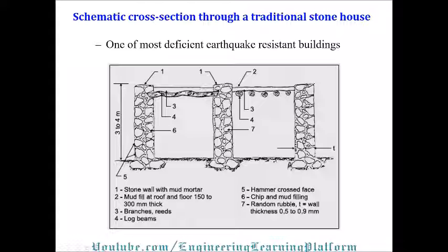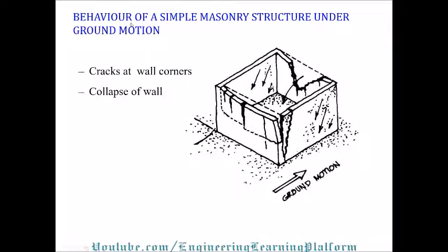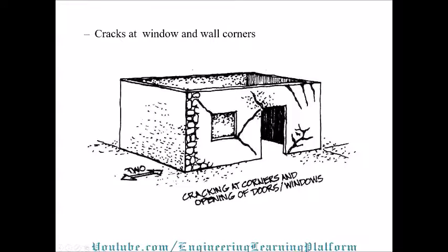Under seismic ground motion, we observe cracks at wall corners, and in many cases stone structures collapse due to these cracks. Stone structures generally have very poor performance under seismic ground motion. We will look at provisions that must be kept in mind when designing stone structures, including cracks at windows, walls, corners, and door openings.